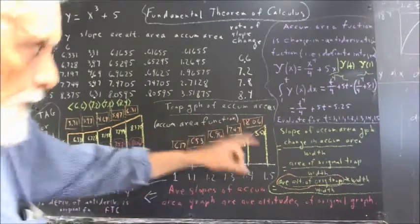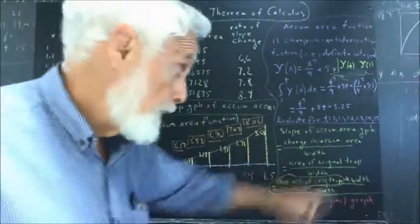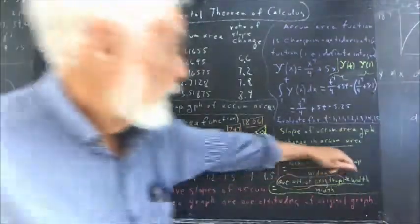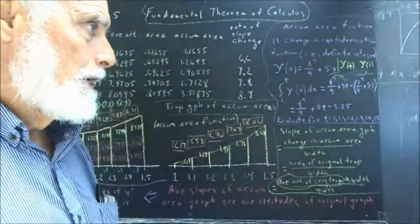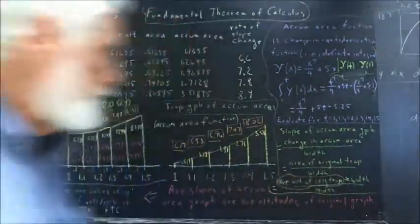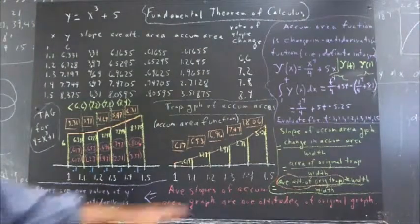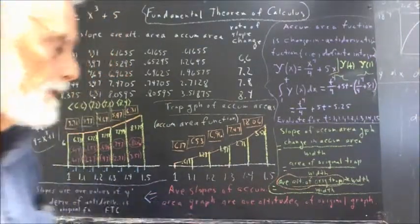So the area of the original trapezoid is the average altitude of the original trapezoid multiplied by the width, and we're dividing that by the width. Well, what's that leave us? That leaves us the average altitude of the original trapezoid and explains this statement completely.